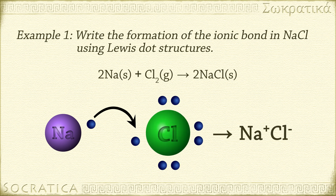Now the sodium ion has the same electron configuration as the noble gas neon. By losing that extra electron, it has a full octet of valence electrons. The chloride ion, by gaining an electron, now has the same electron configuration as the noble gas argon.